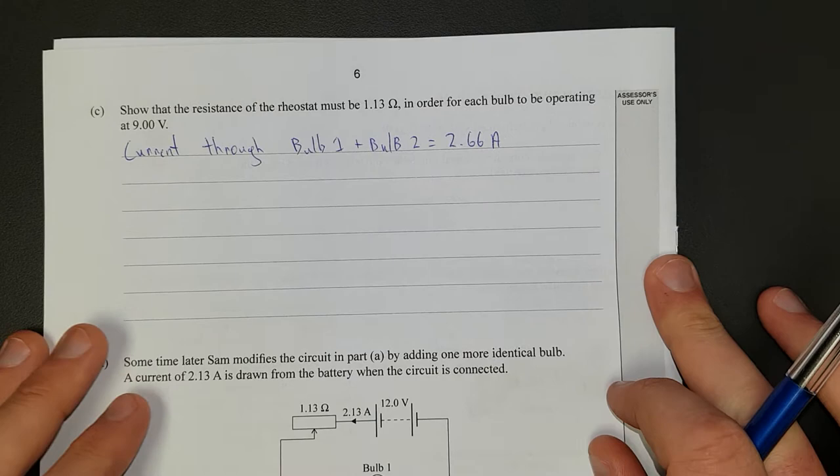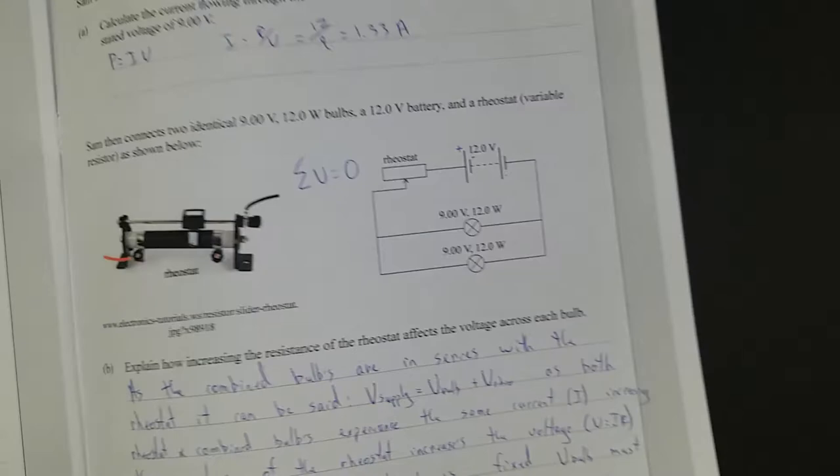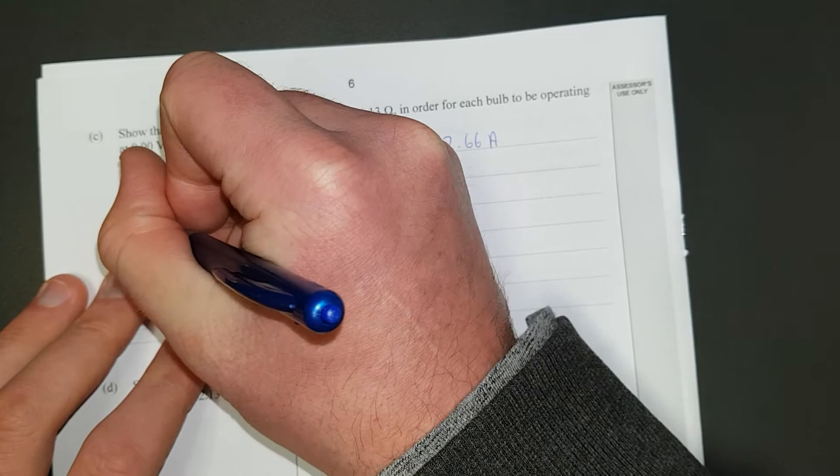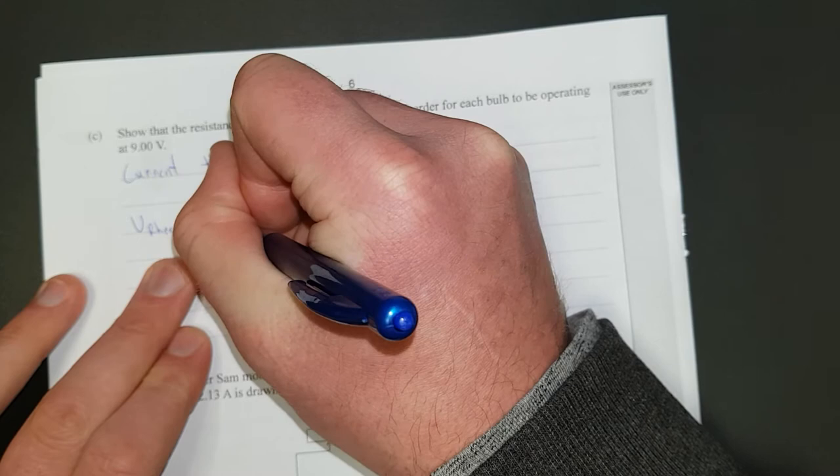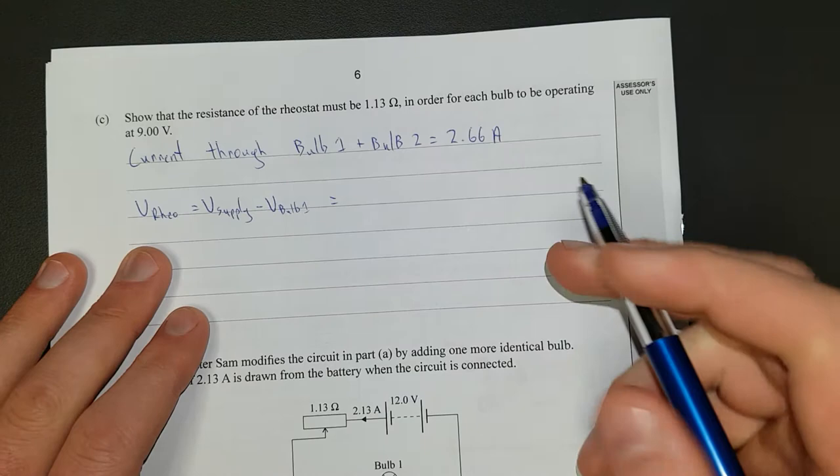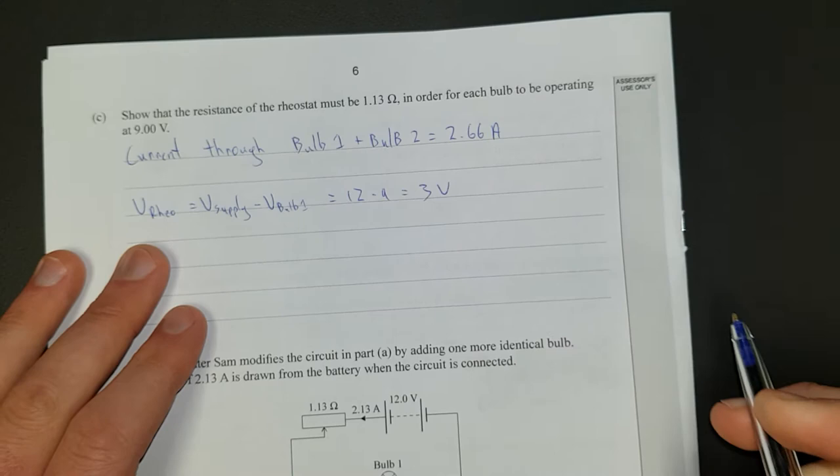So now we've got the current. What about the voltage? So from that formula over there on the other side of the page, where I have the supply is equal to the bulb plus the rheostat, we'll just rewrite that in terms of V-Rio. Is equal to V-supply minus V-bulb 1. We'll choose the path going through 1, and that's just going to be equal to 12 minus 9 is equal to 3 volts.